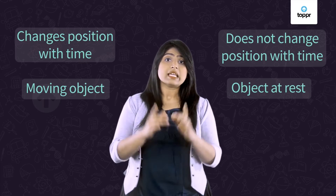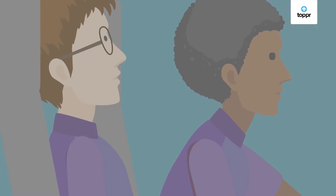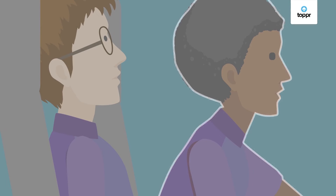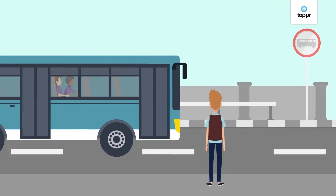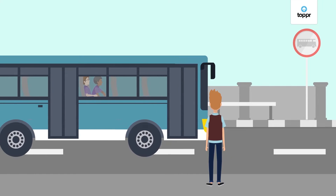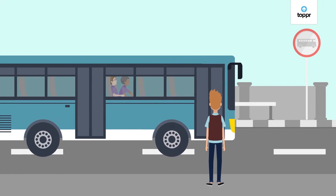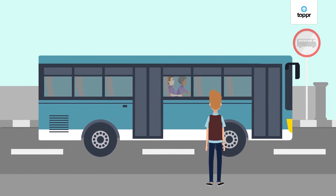But is it that simple? Imagine you're on a bus. The person sitting next to you appears to be at rest. But for someone standing on the ground, the same person appears to be in motion.